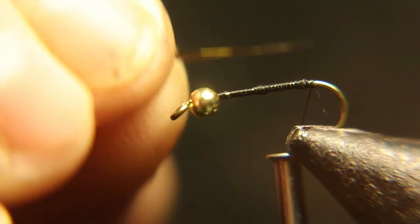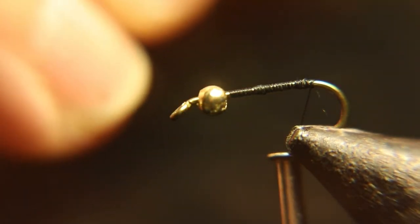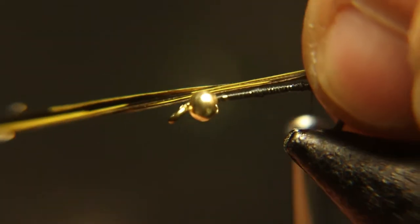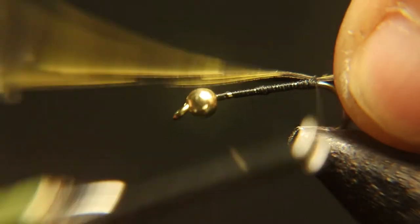Now we're going to tie in some olive pheasant tail for the tail. Remember, only about two-thirds of the length of the shank of the hook, or roughly about half is what I do.